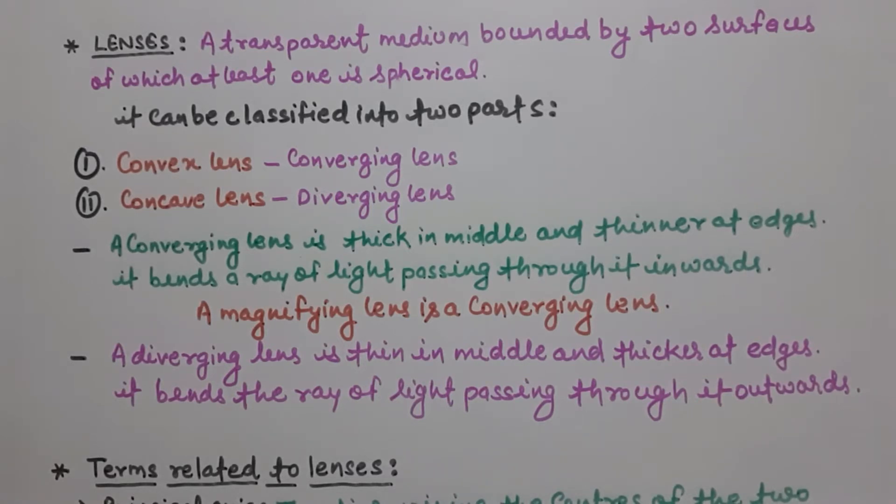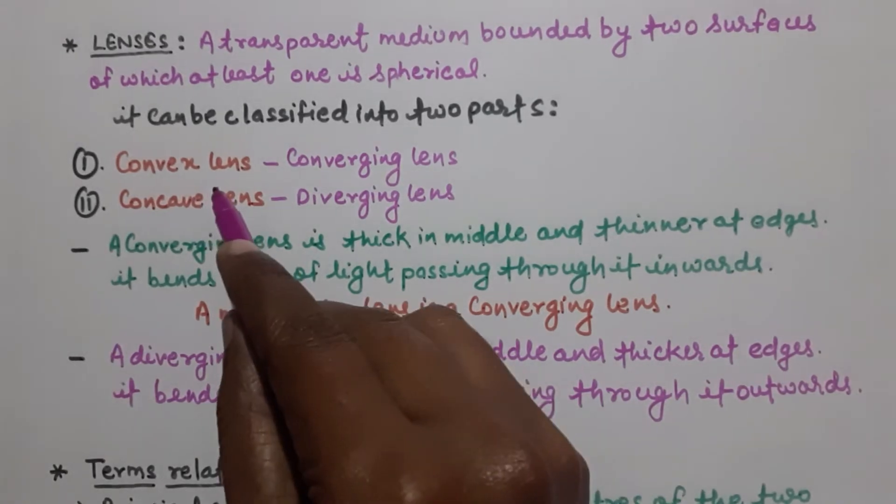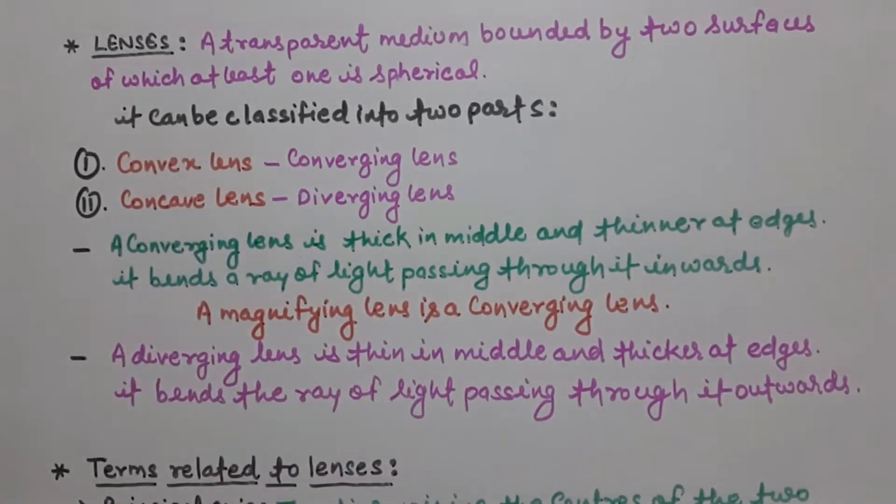Various types of lenses are there. Lenses are available in various shapes and sizes. It can be classified into two parts. First one is convex lens, second one is concave lens.